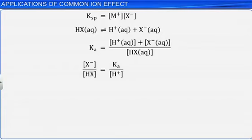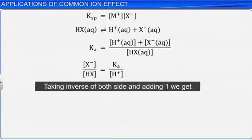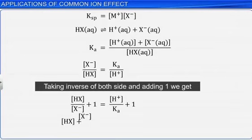Taking inverse of both sides and adding 1, we get [HX]/[X-] plus 1 is equal to [H+]/Ka plus 1. This can be written as ([HX] + [X-])/[X-] is equal to ([H+] + Ka)/Ka.